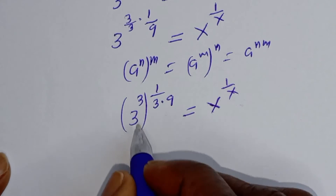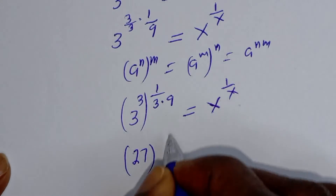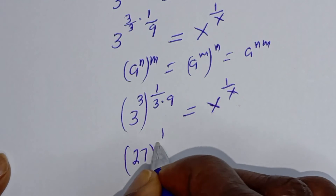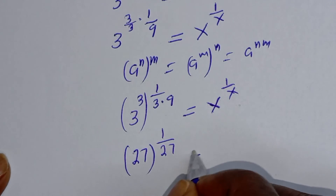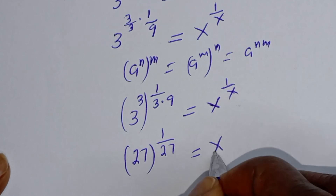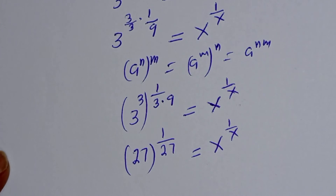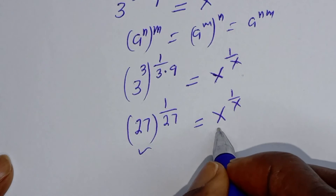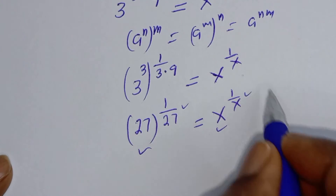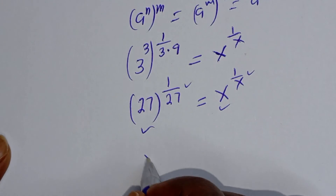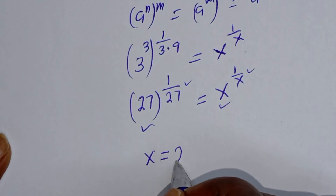Then this is 3 raised to power 3, that is 27, to the power of 1 over 3 times 9. So 27 is equal to x raised to power 1 over x. From here, since the base and exponent match, we get 1 over 27 equal to 1 over x. Therefore s is equal to 27.